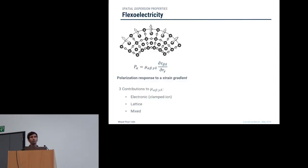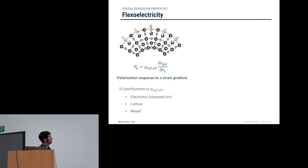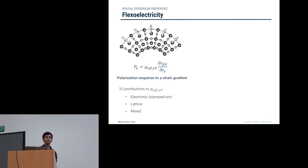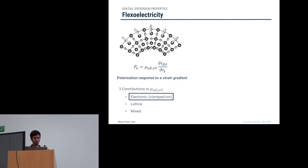I don't think there is much need to introduce the flexoelectric effect. I just want to recall that whenever one tries to compute this magnitude with electronic structure methodologies, there are three different contributions to the total flexoelectric tensor: the electronic one, the lattice-mediated, and a third mixed electronic-lattice contribution. Today I will focus exclusively on the calculation of the clamped-ion or electronic flexoelectric tensor.